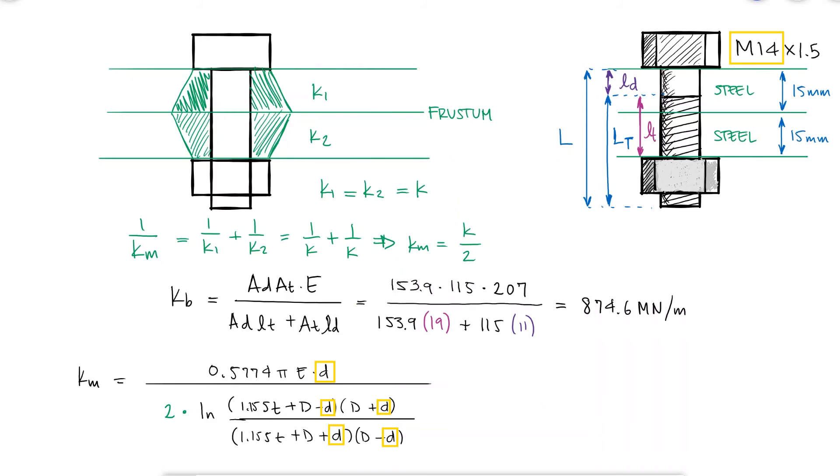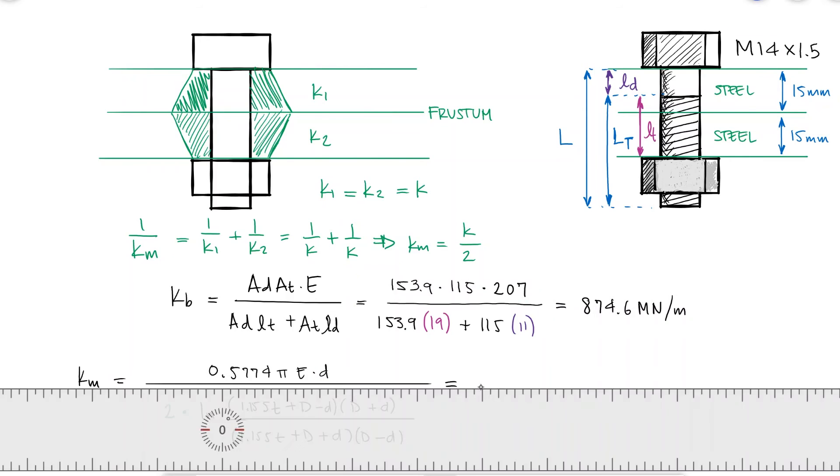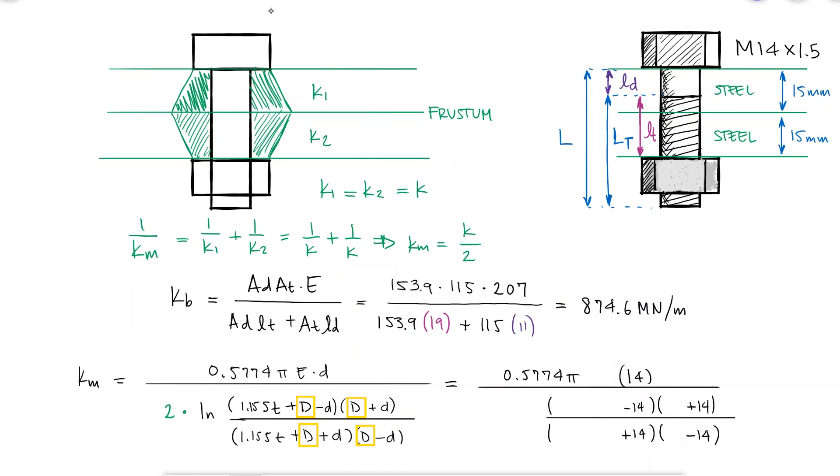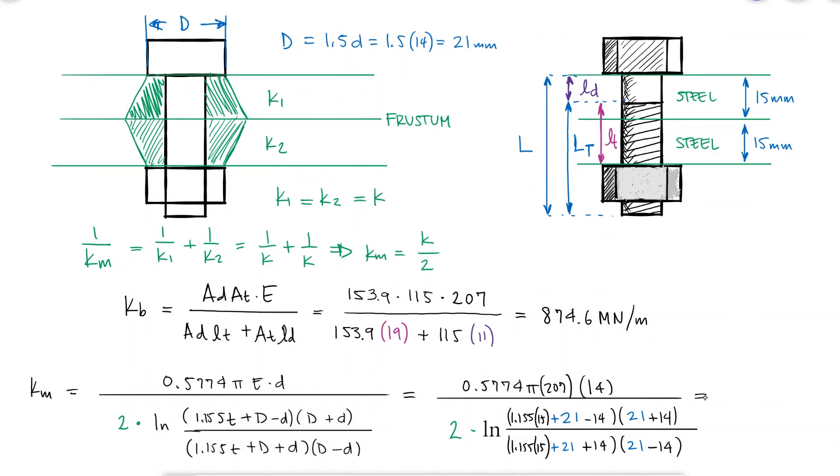With the nominal diameter of the bolt, knowing that the diameter of the head of the bolt and the nut are usually 1.5 times the nominal diameter of the bolt, the elastic modulus of the steel, and that the thickness of each member is 15mm, we find that the stiffness of the members is 3,116.5 MN per meter.